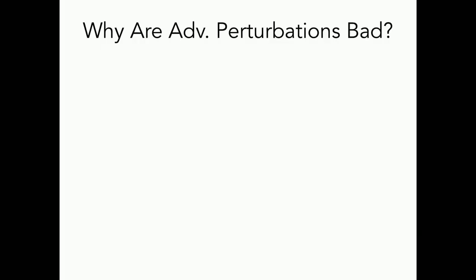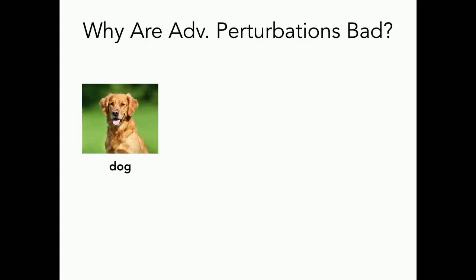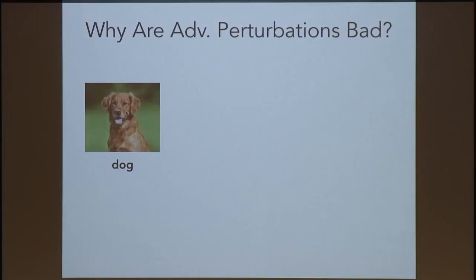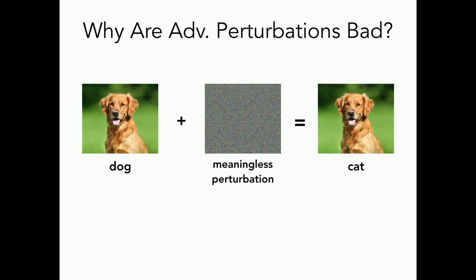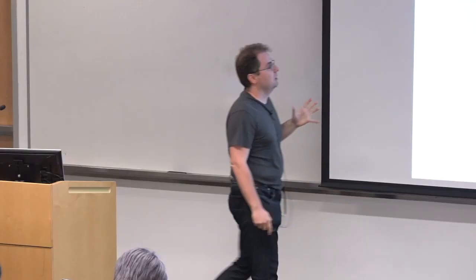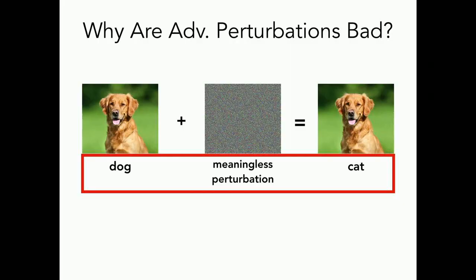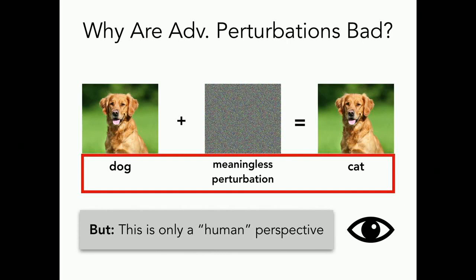Let's ask a question we might not have asked: why are adversarial perturbations bad? What is upsetting about them? They are upsetting because a meaningless perturbation — adding a small noise to a dog image — causes the model to classify it as a cat. This seems like a meaningless change to the data leading to a semantic change. But here is a crucial point: this is upsetting only if you are a human.